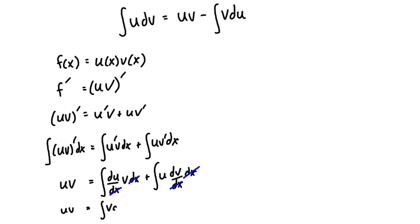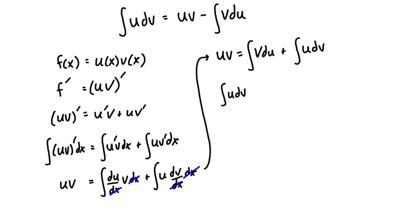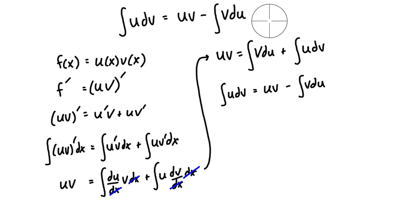Now we can start canceling out the dx's. We're left with uv = the integral of v du plus the integral of u dv. Rearranging, the integral of u dv equals uv minus the integral of v du — and that's exactly the integration by parts formula. That's how we derive it, starting from a general product function.